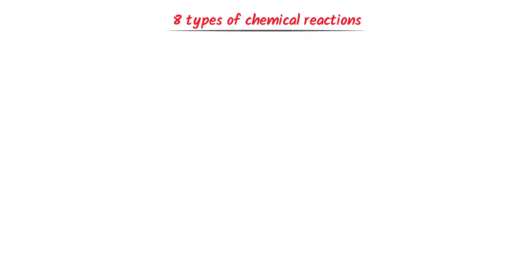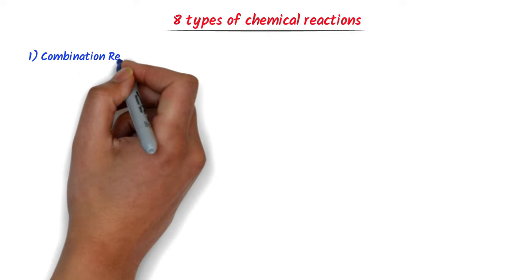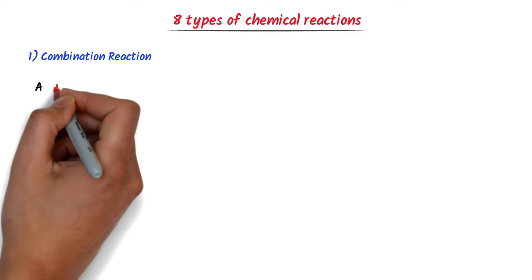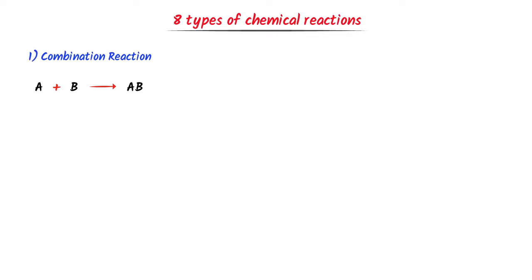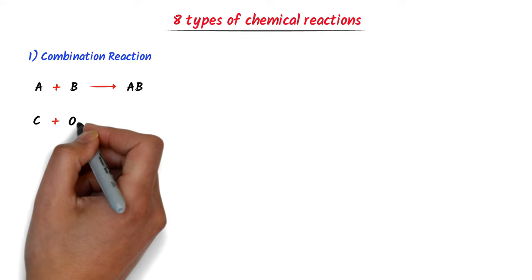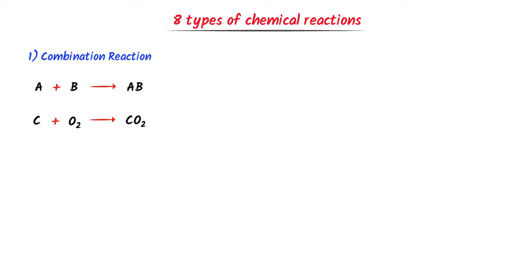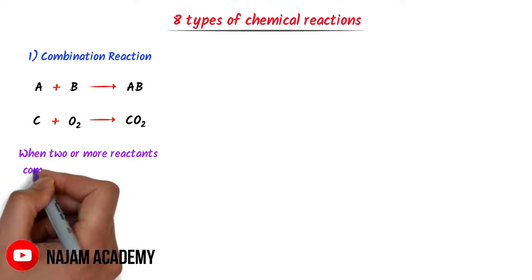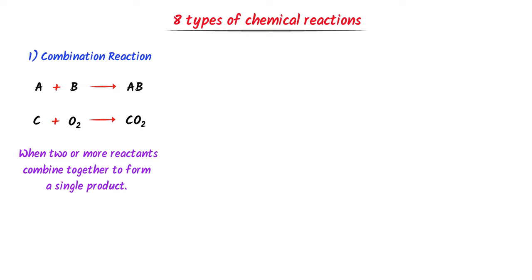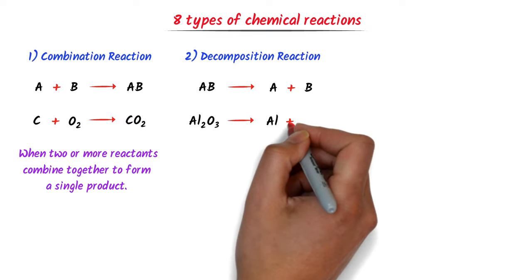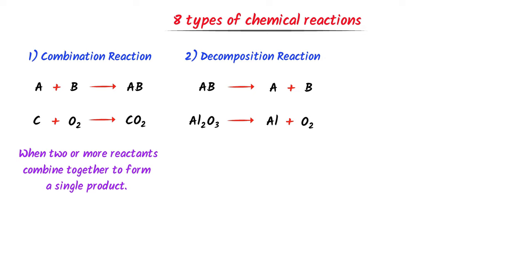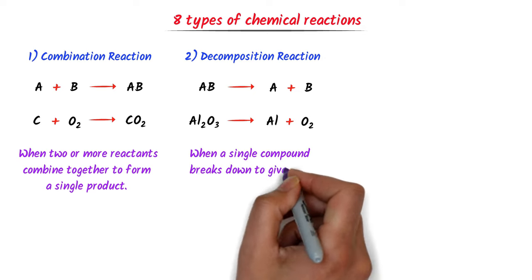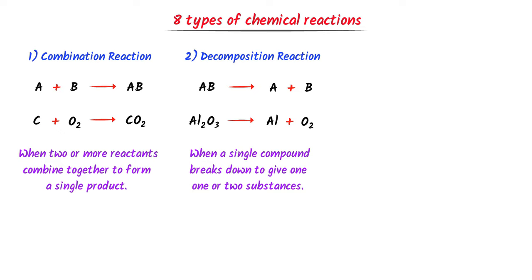Now let me teach you the types of chemical reactions. The first type is combination reaction — when A plus B combine together they form AB. For example, carbon plus oxygen gas combine to form carbon dioxide gas. We define it as: when two or more reactants combine to form a single product. The second type is decomposition reaction — AB breaks down into A plus B. For example, aluminium oxide decomposes into aluminium plus oxygen gas. A single compound breaks down to produce two or more substances.